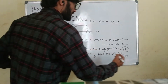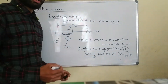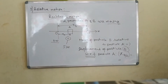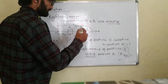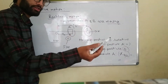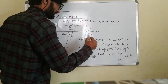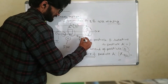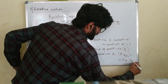The displacement of particle B with respect to A is the displacement of position. You can find x_B minus x_A. The displacement of particle B relative to particle A is x_B minus x_A.